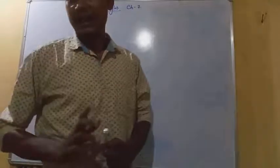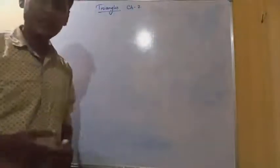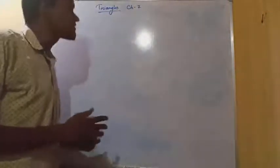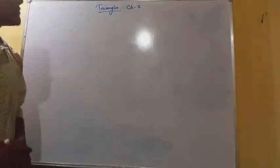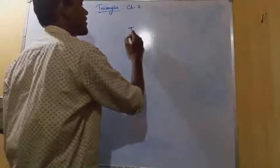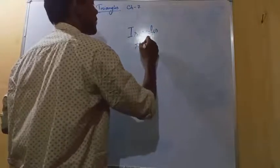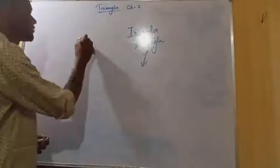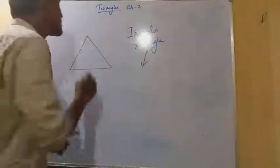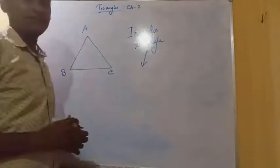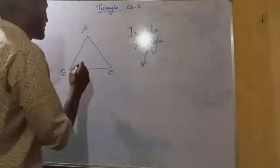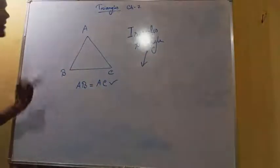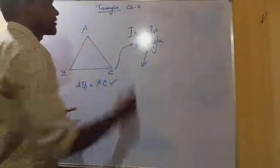So here we are going to discuss about isosceles triangles. Now, if I ask you about an isosceles triangle, all of you have an idea about it. An isosceles triangle means a triangle where two sides are equal. Say this is triangle ABC, where two sides are equal - that is, side AB is equal to side AC. When two sides of a triangle are equal, it is called an isosceles triangle.